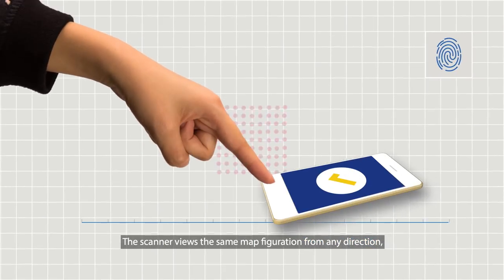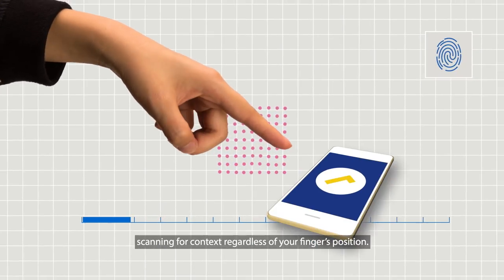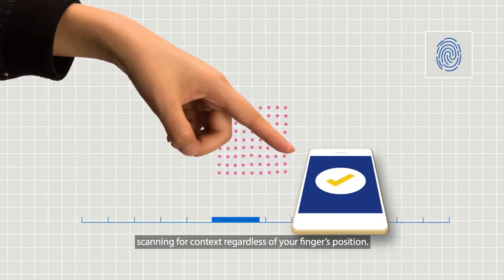The scanner views the same map configuration from any direction, scanning for context regardless of your finger's position.